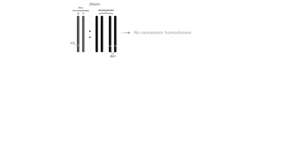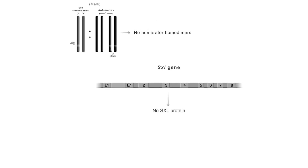In male embryos, there are not enough sisterless homodimers to activate the early promoter of the sex lethal gene, so no SXL protein is produced in males.